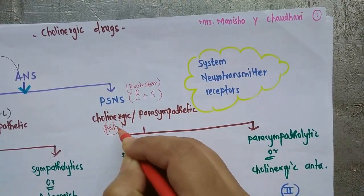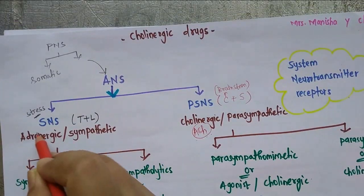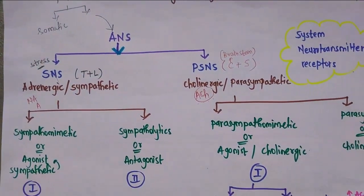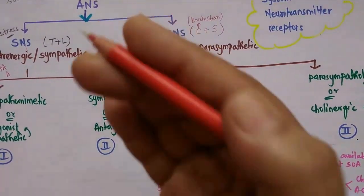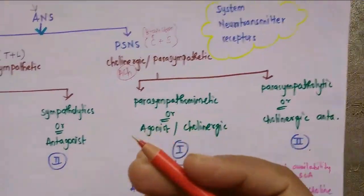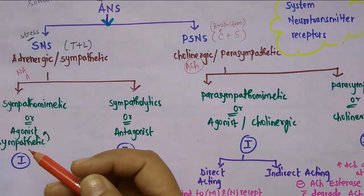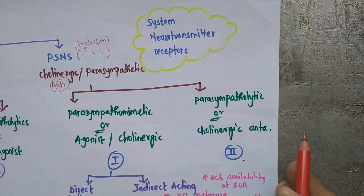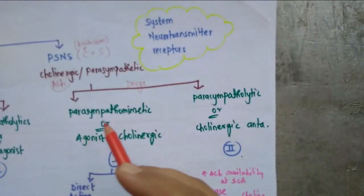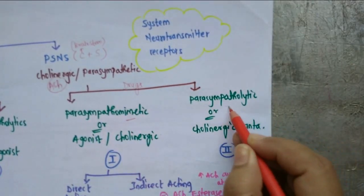Acetylcholine is abbreviated as ACH (capital A, capital C, small h). Adrenergic is named so because the neurotransmitter involved is noradrenaline. The adrenergic system will be covered in detail in the next video lecture. Here we are focusing on the parasympathetic system. The drugs acting on the parasympathetic system are subdivided into two: parasympathomimetic and parasympatholytic.